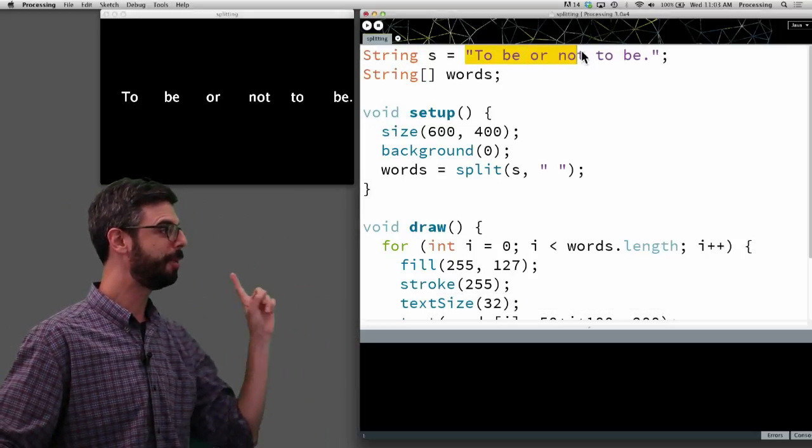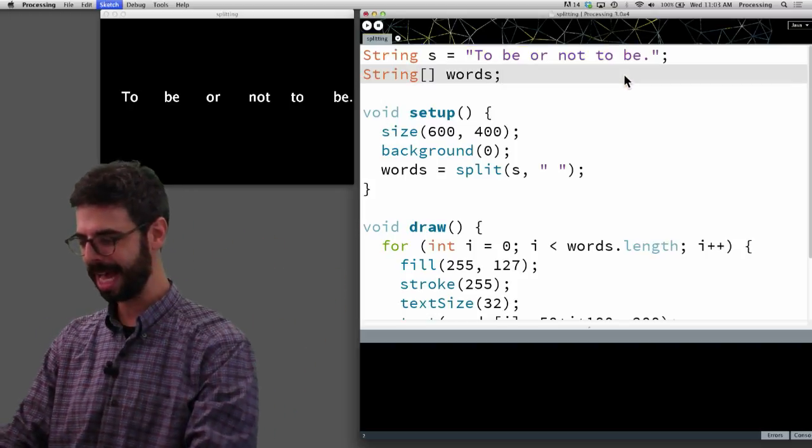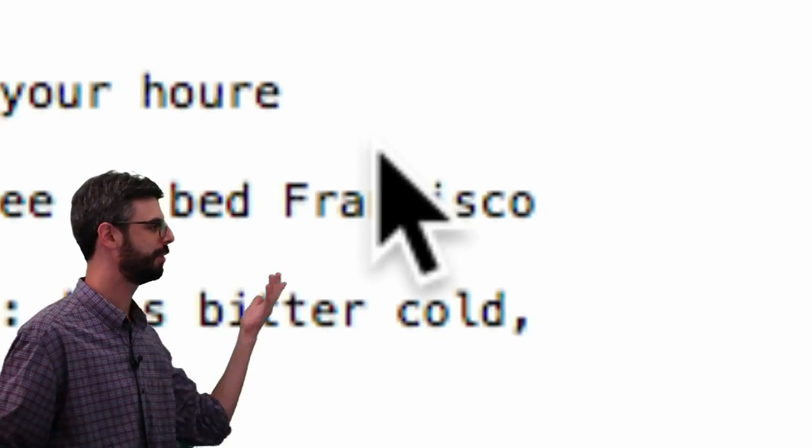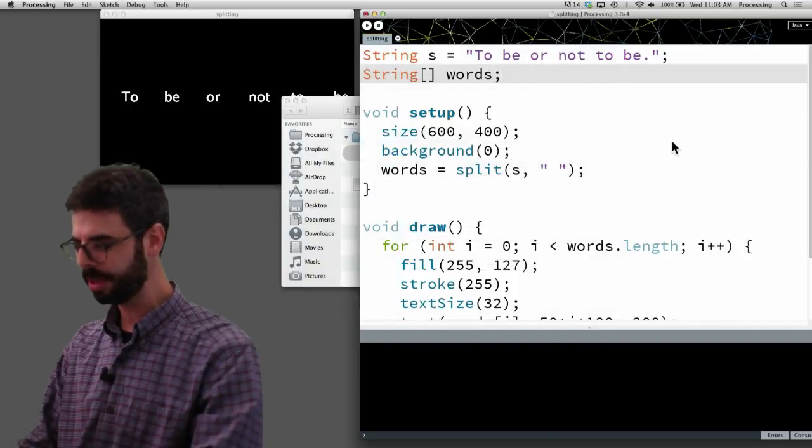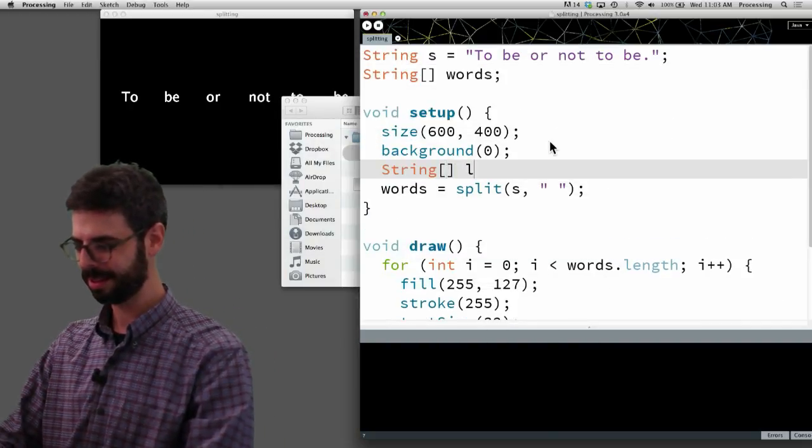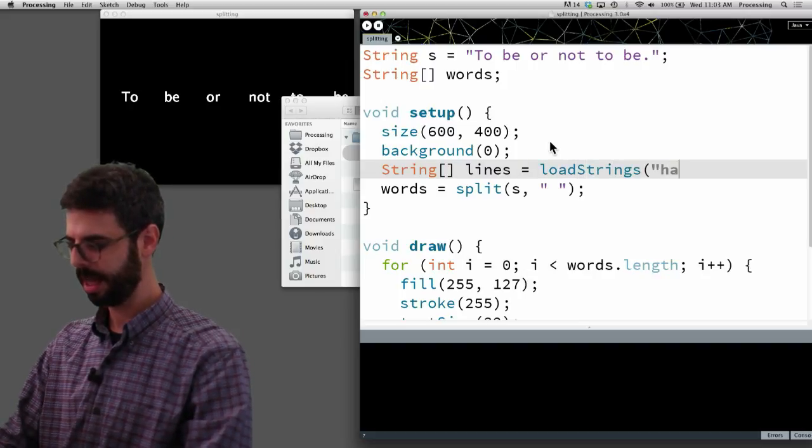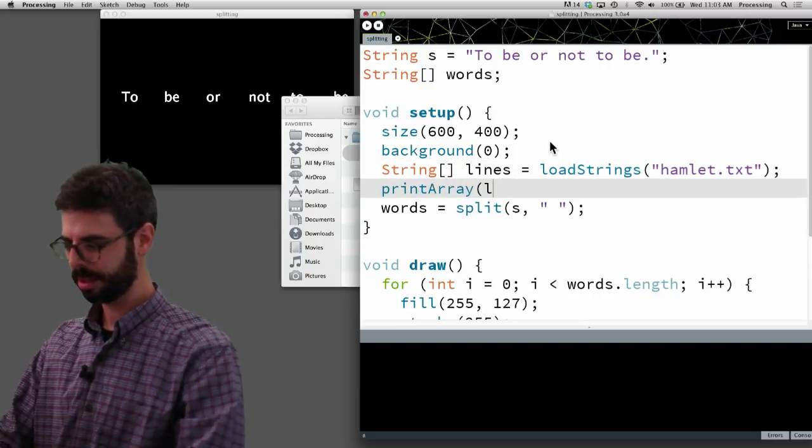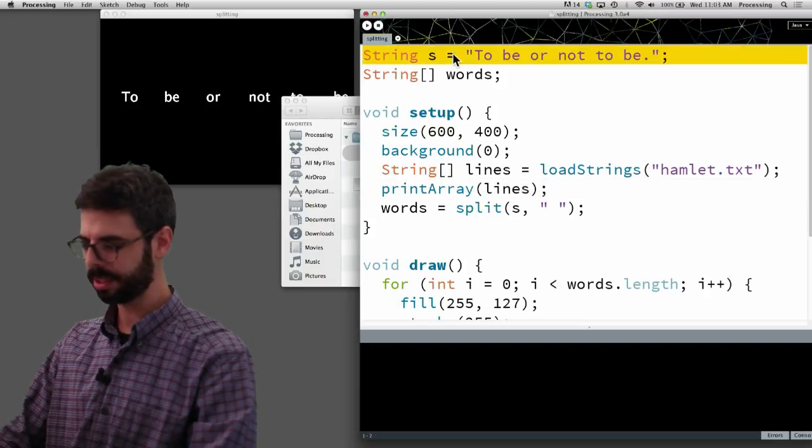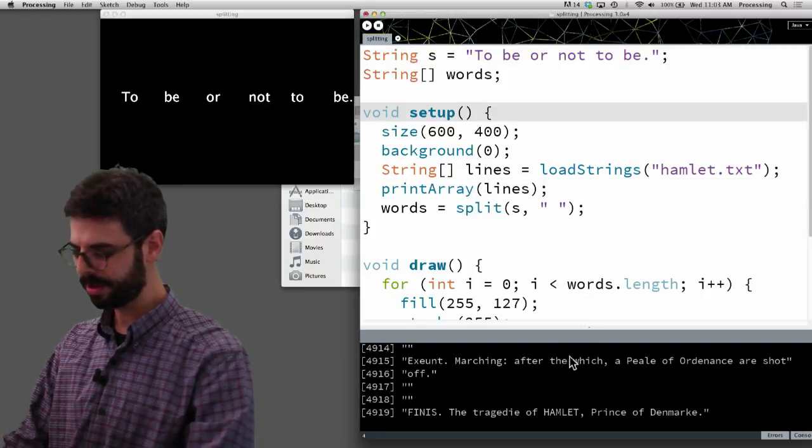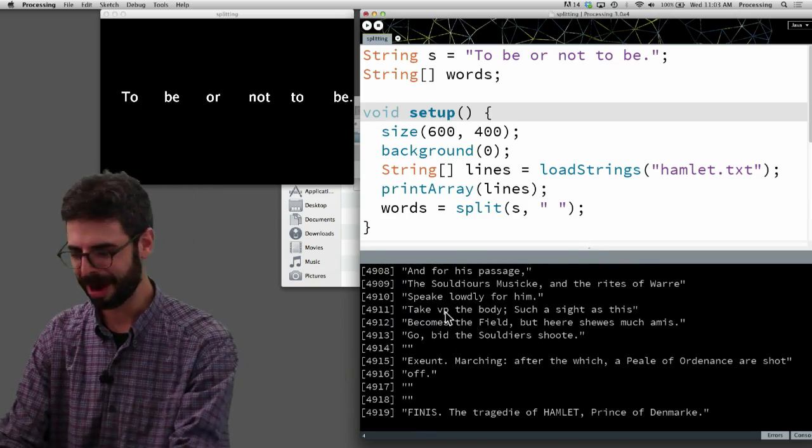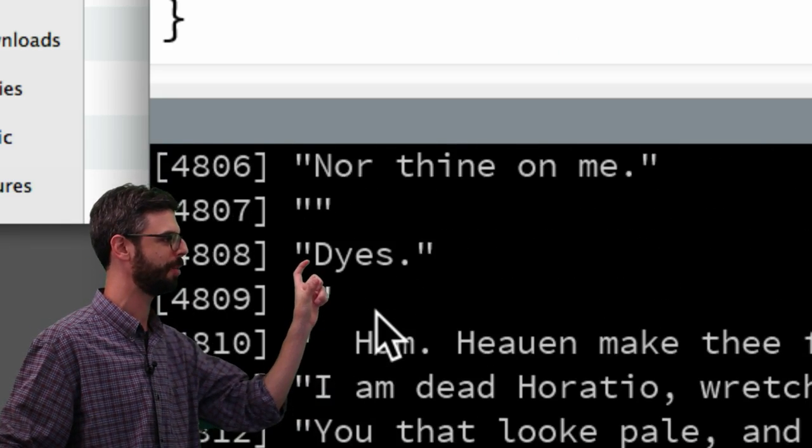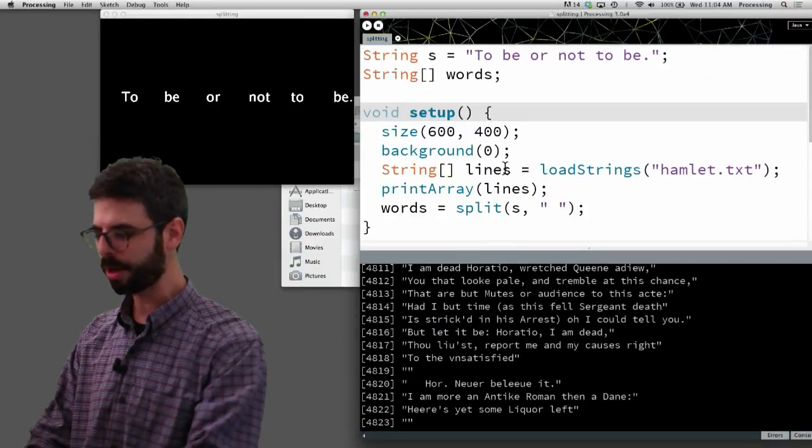Now, let's think about this again. So 'to be or not to be', this was a single string. Let's look at the data folder. And now you can see here I have the entire play Hamlet right here in a text file. So what I can do here is say loadStrings hamlet.txt. And let's just print that out to the console. And you can see that in fact, there's a huge array. And that huge array has almost 5,000 lines in it. Every element of that array is a single line of text from the play.